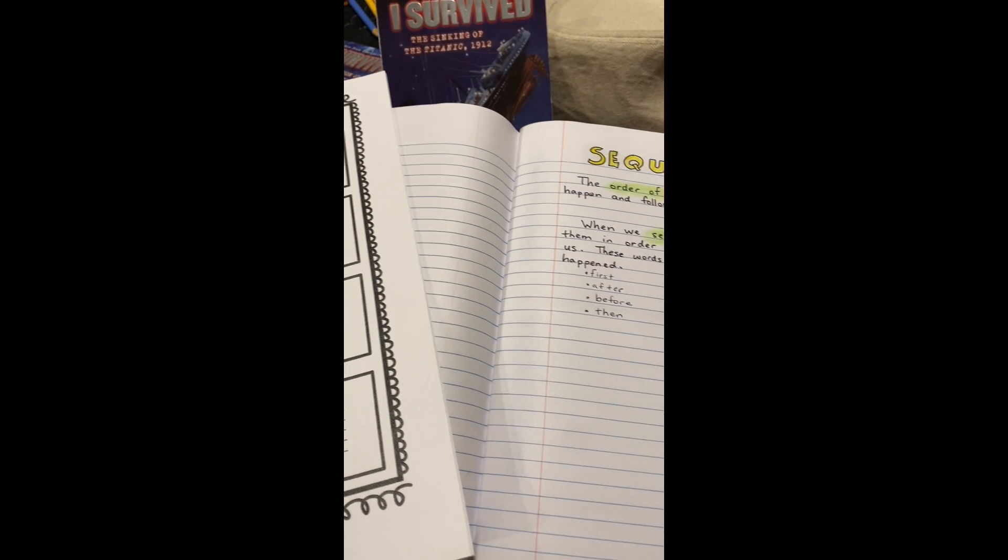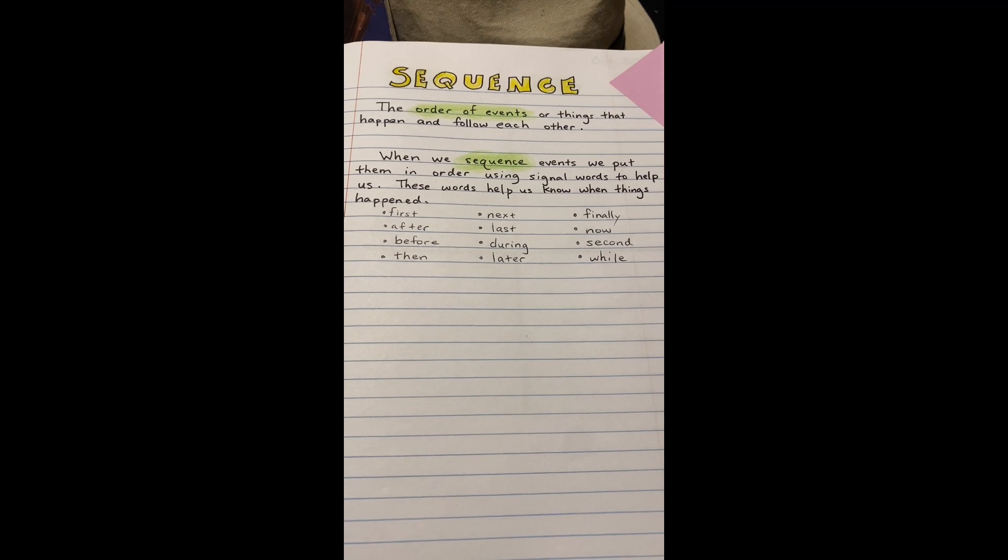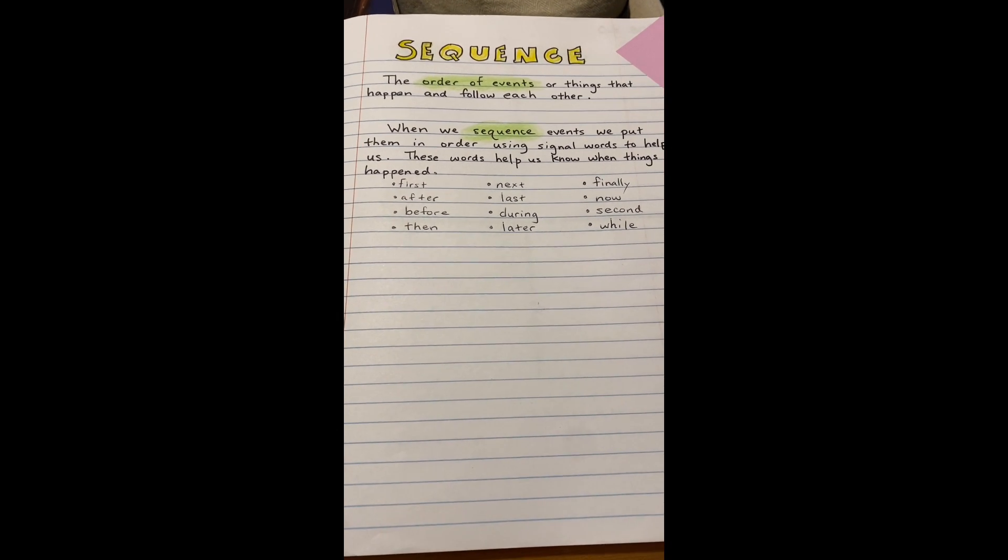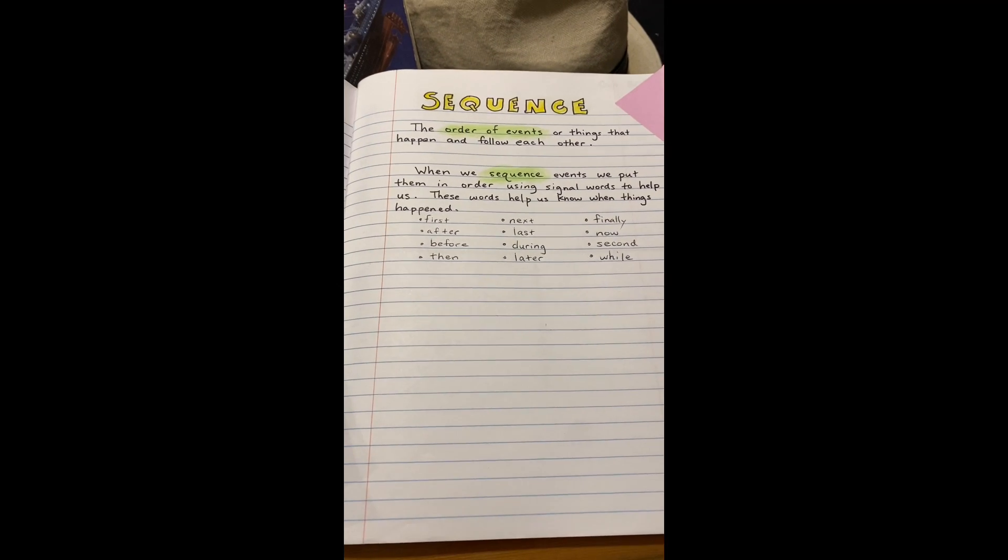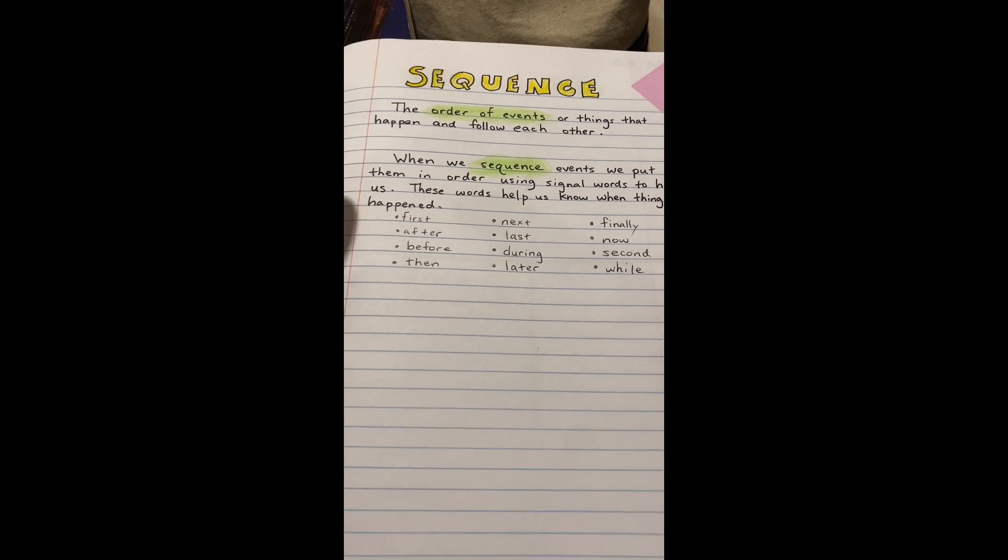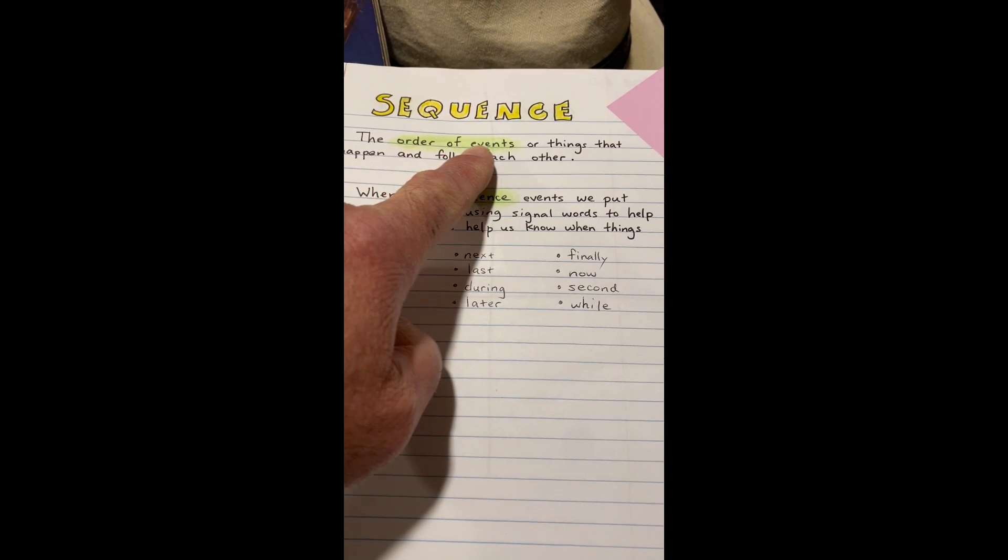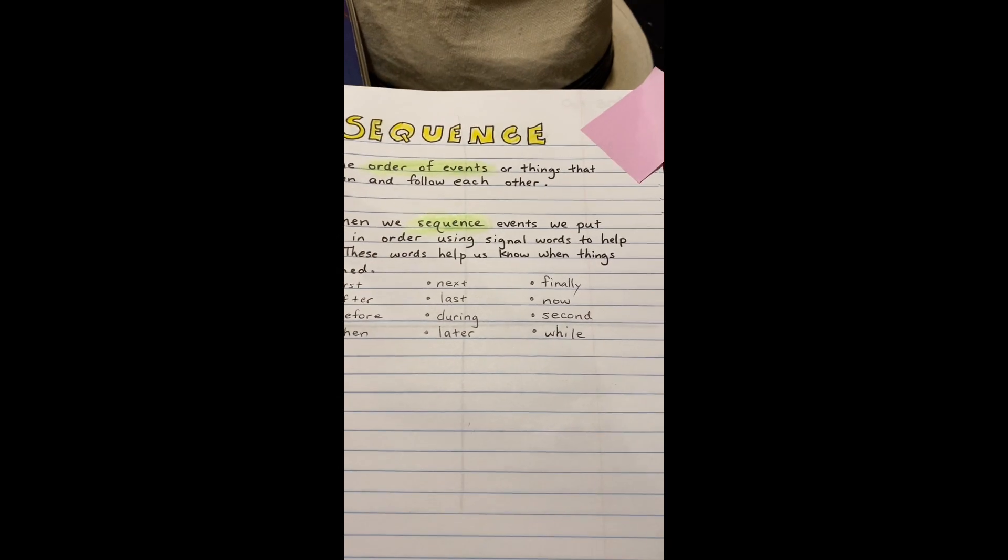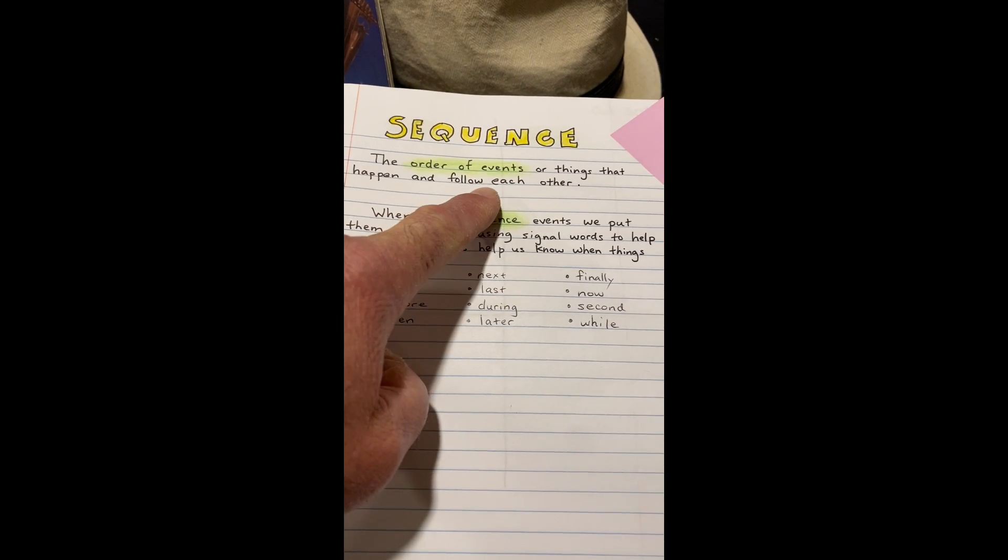We are getting back into the unit of study on sequence. We started this last week. Honey Rose put a page in her notes to get us started with this. Sequence is the order of events or things that happen and follow each other.